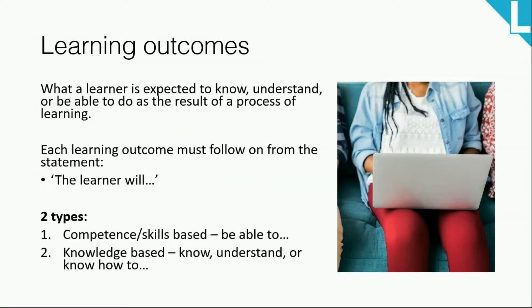Learning outcomes set out what a learner is expected to know, understand or be able to do as a result of the process of learning — in other words, what the learner will take away from the learning experience and be able to apply in the future. There are two types of learning outcomes: competence or skills based, and knowledge based. Each learning outcome must follow on from the statement 'the learner will...'